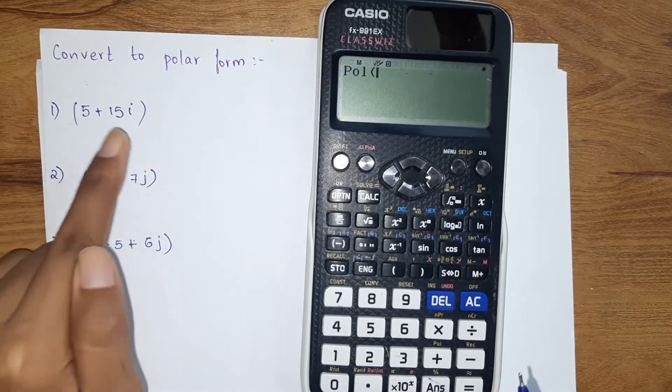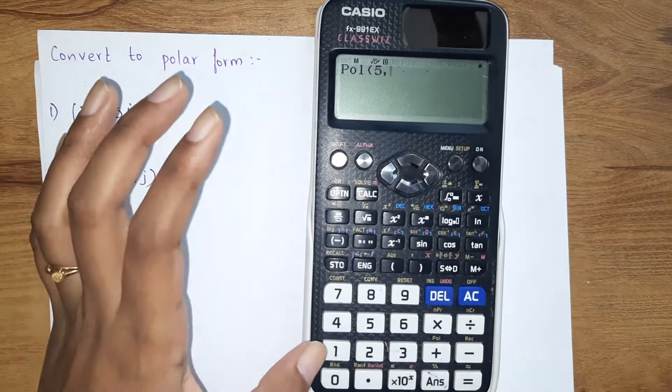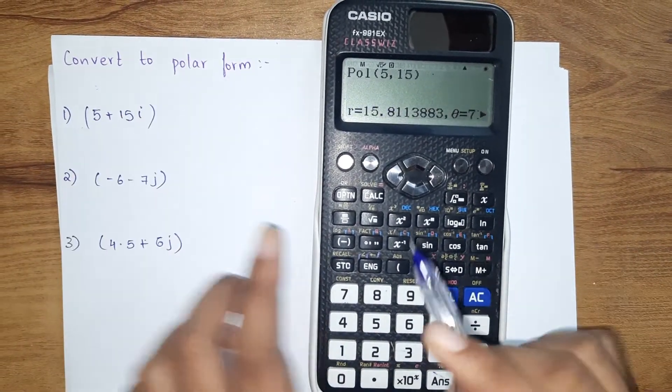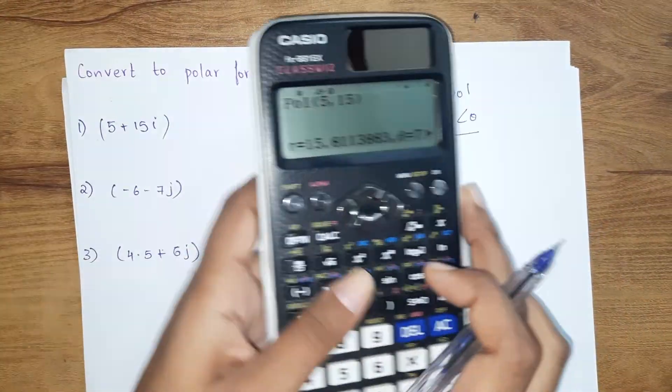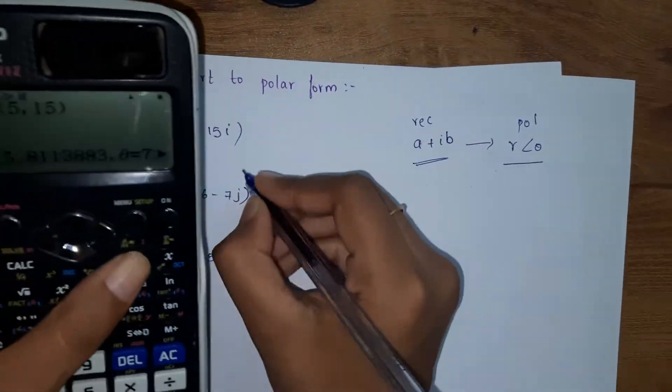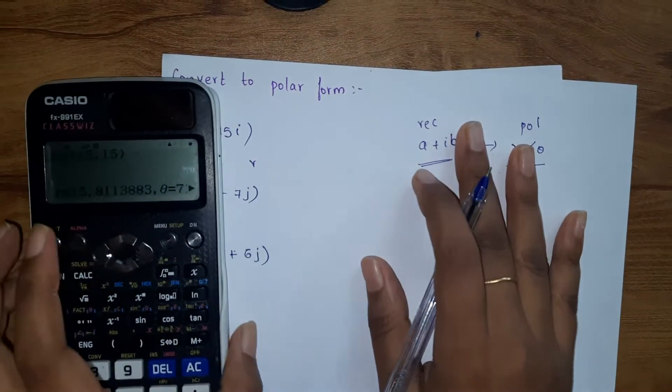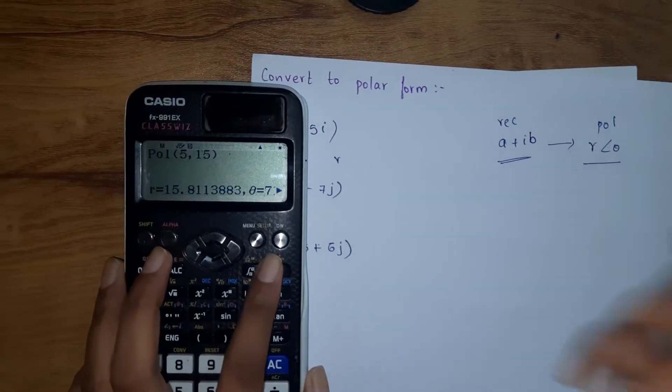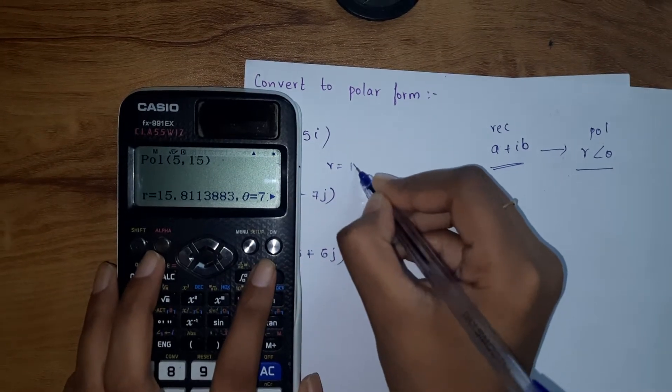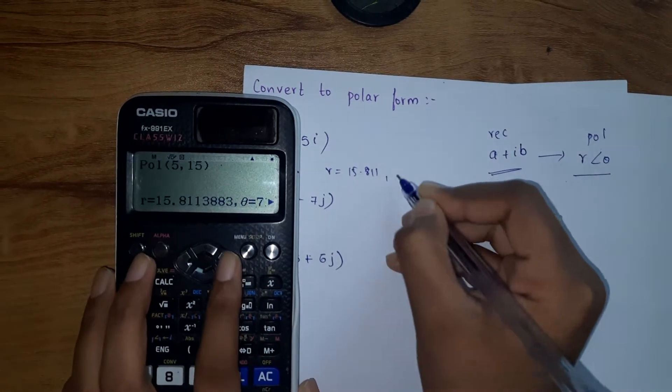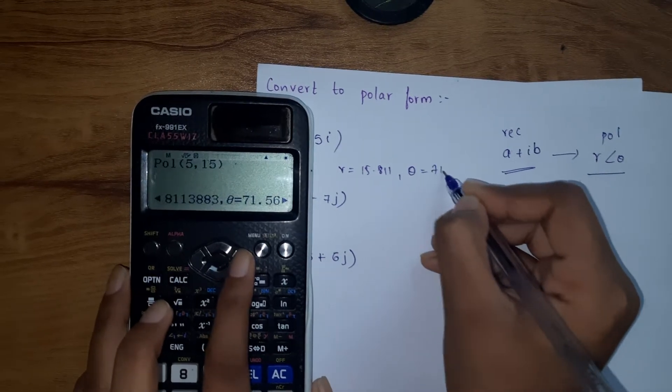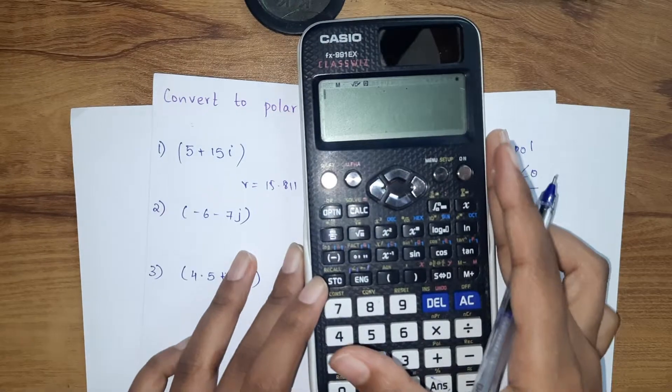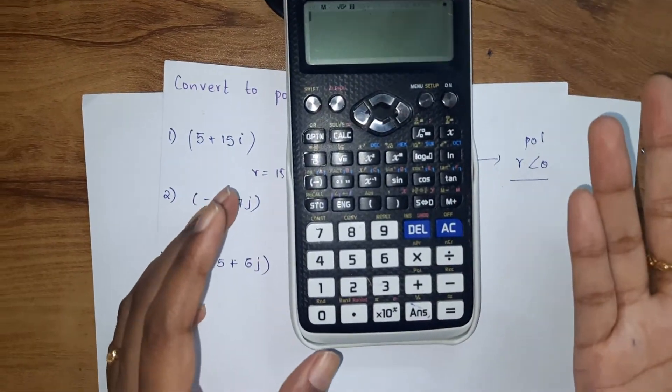Our question is 5 and 15, so enter 5 comma 15, close the bracket. You get the answer - that is r and theta. R is equals to 15.811 and our theta value is 71.56 degrees.